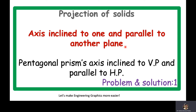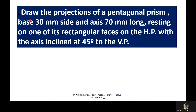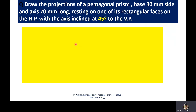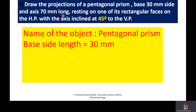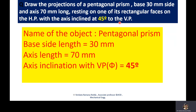Now we will move towards the problem. The given problem is: draw the projections of a pentagonal prism with base 30 mm side and axis 70 mm long, resting on one of its rectangular faces on the HP with the axis inclined at 45 degrees to the VP. The given data is: object is a pentagonal prism, base length 30 mm, axis length 70 mm, axis inclination with VP is 45 degrees, and its face is on HP.